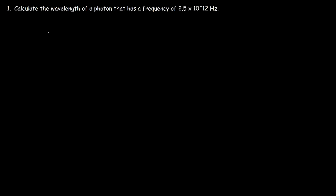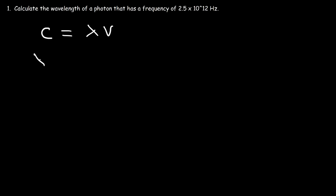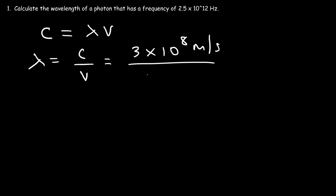So what equation do we need? We'll use C equals lambda times nu. C is the speed of light, lambda represents the wavelength in meters, and nu is the frequency in Hertz. So the wavelength is going to be the speed of light divided by the frequency. The speed of light is 3 times 10 to the 8 meters per second, and the frequency is 2.5 times 10 to the 12 Hertz, which is the same as seconds to the minus 1.